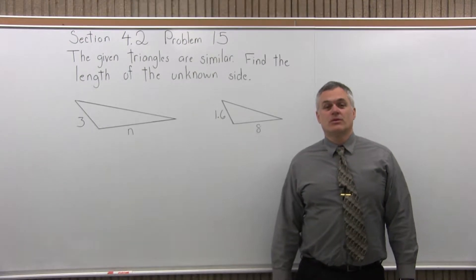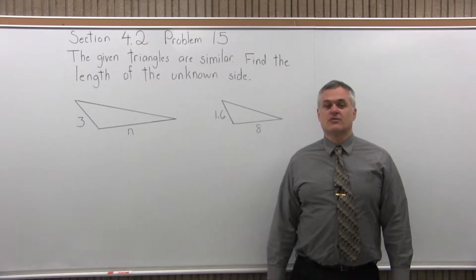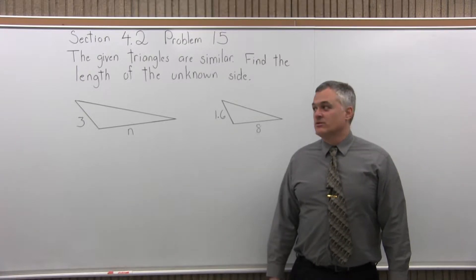This is Section 4.2, Problem 15. It says the given triangles are similar. Find the length of the unknown side.